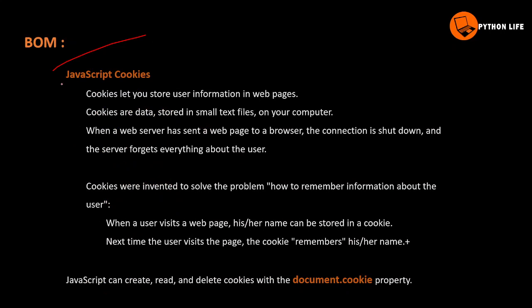Next, there are cookies in JavaScript. Cookies let you store some information on web pages. For example, if you have product details, user information such as IP address, MAC address, or username stored in the browser — whether on a laptop or phone — you can use cookies to store that data.